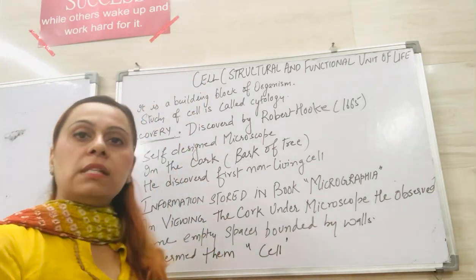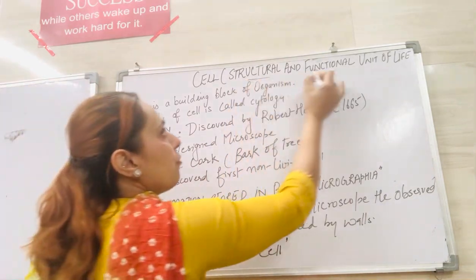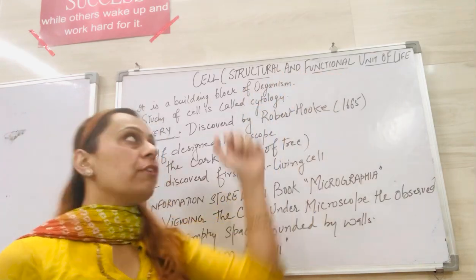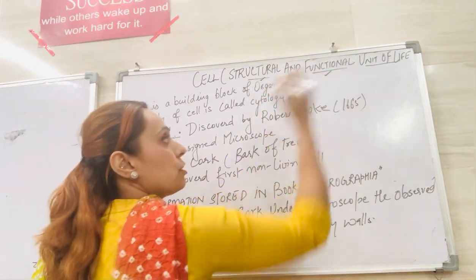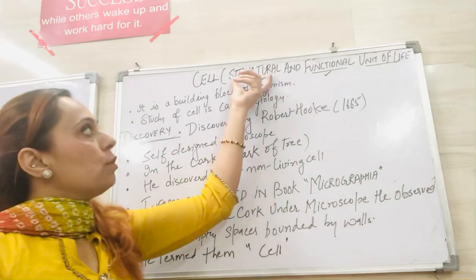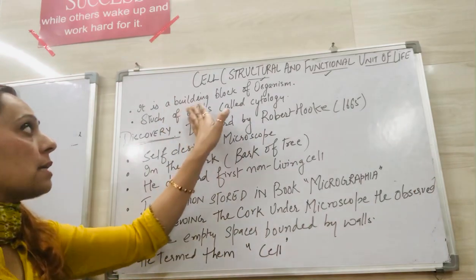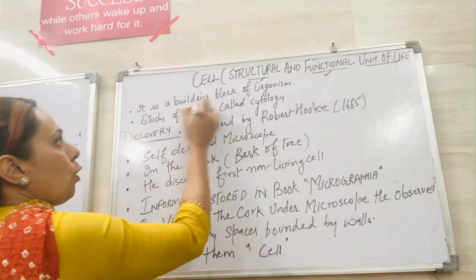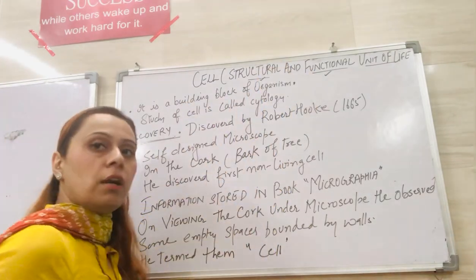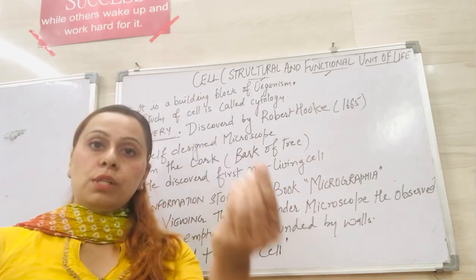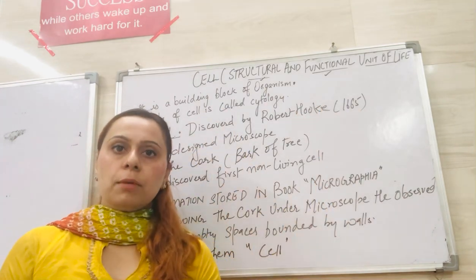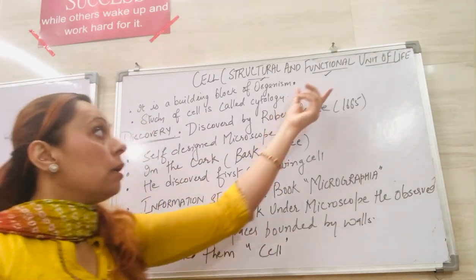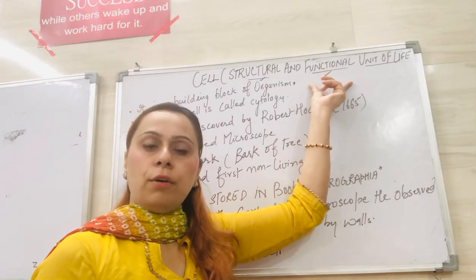First, we start with the fact that the cell is known as the structural and functional unit of life. We call it a structural unit of life because the cell actually makes the whole structure of an organism — it is the building block of an organism. That is why we call it a structural unit of life, because the cell is the smallest part.